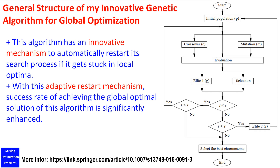Here is a general structure of my innovative genetic algorithm for global optimization. This algorithm has an innovative mechanism to automatically restart its search process if it gets stuck in local optima. With this adaptive restart mechanism, the success rate of achieving the global optimal solution of this algorithm is significantly enhanced.